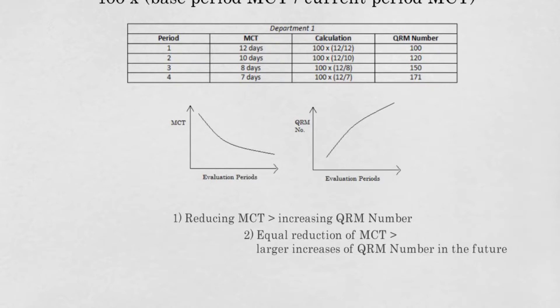Second, in the future, equal reductions in lead time result in larger increases of the QRM number. When looking at the table, if the team takes two days out of its MCT in the second period, they get 20 points. However, if they take two days out of its MCT in the third period, they get 30 points. So the QRM number rewards the team more when it becomes more difficult to squeeze out days at a later stadium of the improvement process.